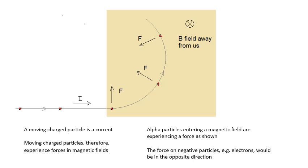Currents experience forces, and now consider a moving charge. On this diagram I'm showing alpha particles, which are positive. So if you've got positively charged particles moving along, then you've got a current. Moving charges experience a force in a magnetic field as well, because they're basically a current — a moving charged particle is a current, and therefore moving charged particles experience forces in magnetic fields.